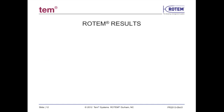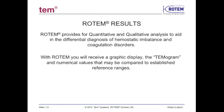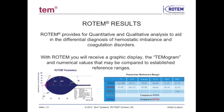Rotem provides quantitative and qualitative analysis to aid in the differential diagnosis of hemostatic imbalance and coagulation disorders. With Rotem, you will receive a graphic display — the temogram — and numerical values that may be compared to established reference ranges. A graphic displaying the temogram and its measured parameters, along with a table of U.S. reference ranges associated with each measured parameter, are provided for interpretation.